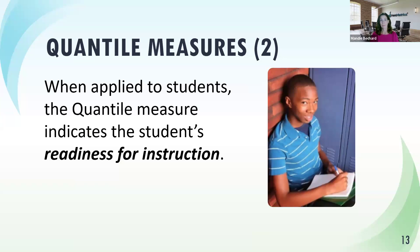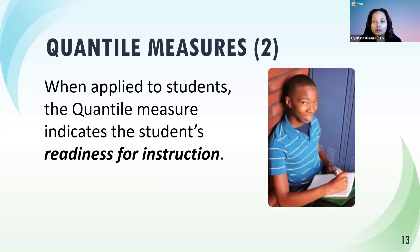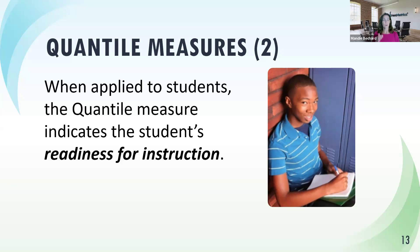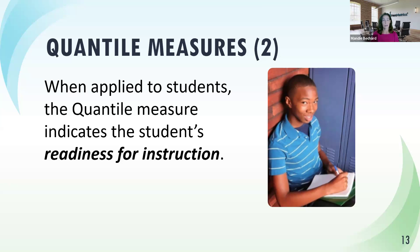A question here: is the Quantile number equivalent to a grade level, or does it map directly to grade levels? The Quantile measures are independent of grade level — there is not a specific Quantile measure tied to a specific grade level. However, the Hub has grade level charts based on national norm data that give general guidance on where the average student at a given grade level typically scores nationally. So you can look at that data for perspective, but the measures themselves are not directly tied to a particular grade level.